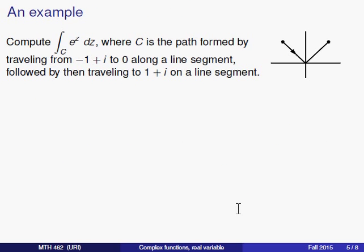All right, let's take a look at our specific example. Let's suppose that C is the path that starts at the point minus one plus i, travels along a straight line to the origin, zero, and then travels along a straight line to the point one plus i, and we want to integrate the function e^z along this path.